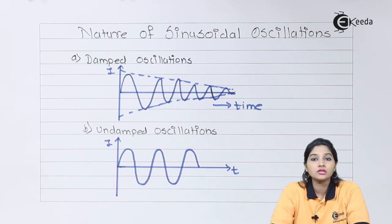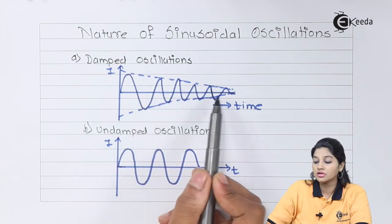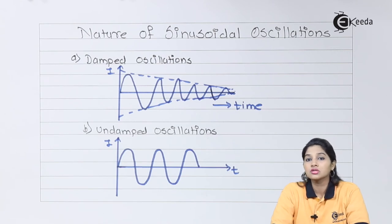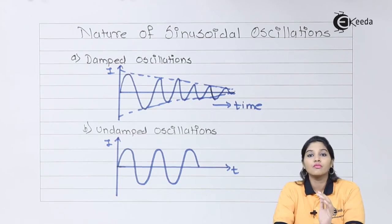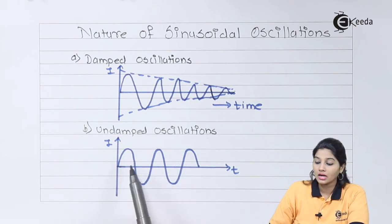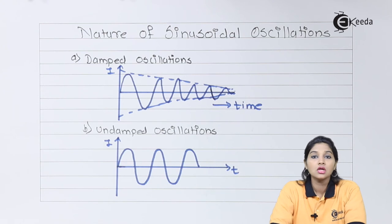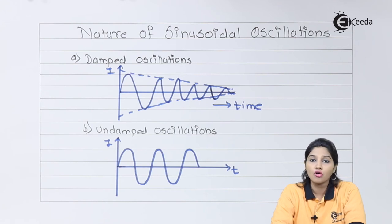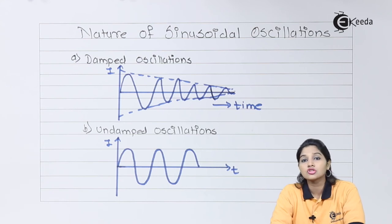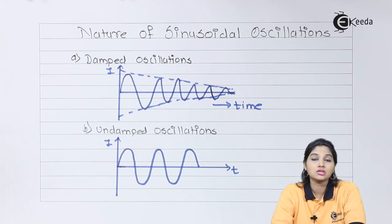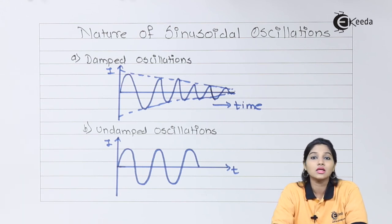From the diagram we can identify the difference between damped and undamped oscillations. In damped oscillations, the amplitude of the waveform is reduced to zero due to power loss in the oscillation circuit — the higher the power loss, the faster the amplitude decreases. In undamped oscillations, the output has constant amplitude and frequency. Undamped oscillations are mostly used in electronic systems and are produced in circuits where there is no power loss or minimal power loss.